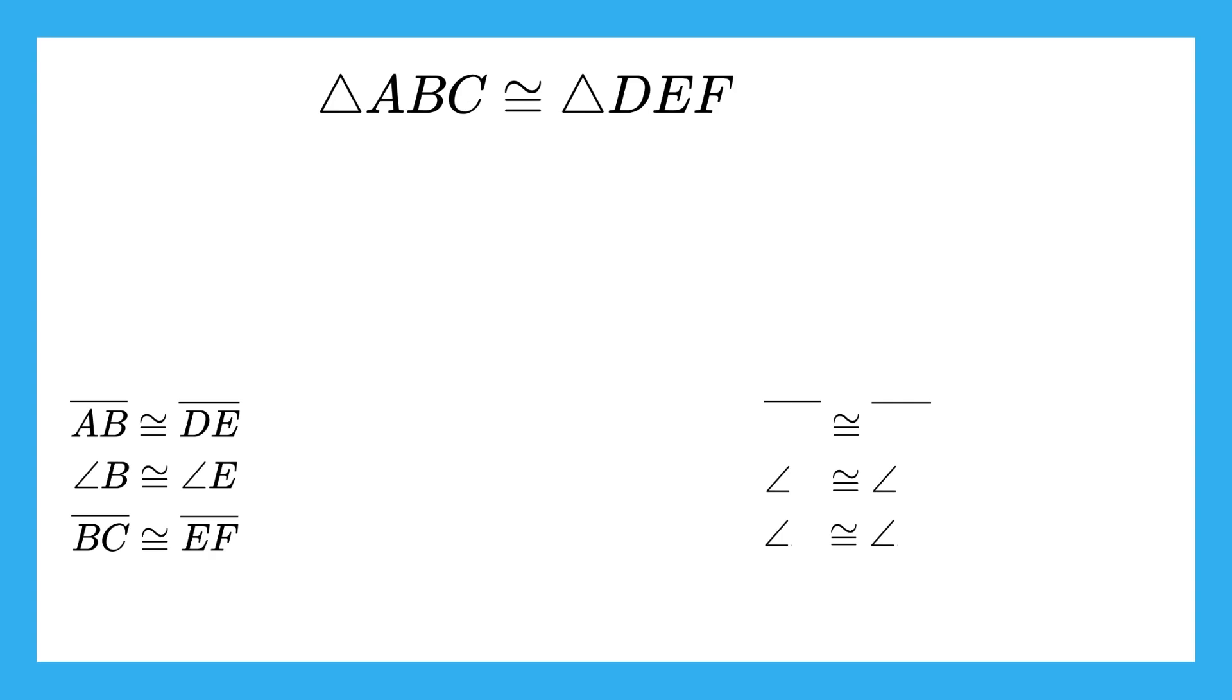Let's check what you found for the third segment congruence first. We already had segment AB congruent to segment DE, and also BC and EF. But we were missing AC and DF, or CA and FD if you wrote them the other way around.